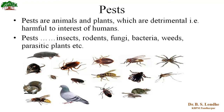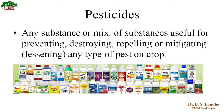Pests may include insects, rodents, fungi, bacteria, weeds, parasitic plants, etc. Pesticide means those chemicals which kill pests. We can write the definition of pesticides as: any substance or mixture of substances useful for preventing, destroying, repelling, or mitigating — that is lessening the number of — any type of pests on the crop. A pesticide is a substance which acts against pests.